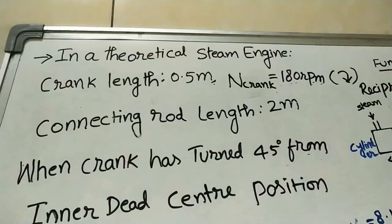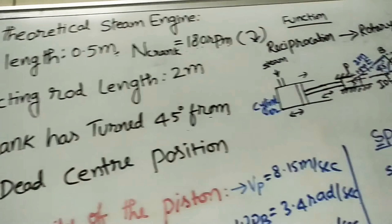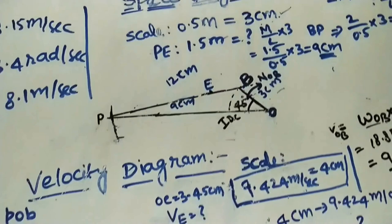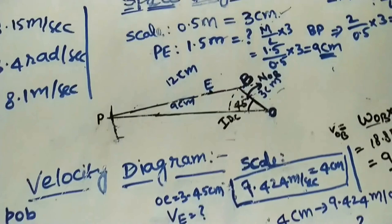Whenever a steam engine problem is given without a diagram, draw the rough triangular diagram first, then do the space diagram with correct scale and the velocity diagram neatly on the sheet. Use the drafter properly for correct answers. In this method, we can find velocities of any point on the connecting rod — such as a point G or C — using the same triangle ratio approach.